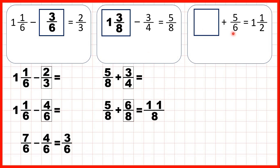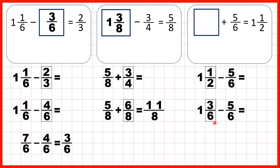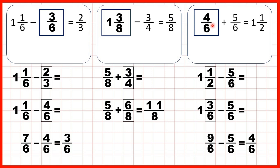Now something plus 5 sixths equals 1 and a half. Here we have a missing number addition, and whenever we have a missing number addition we always use subtraction to find our missing number. So we need to work out 1 and a half minus 5 sixths. We need the denominators to be the same, so 1 and a half is the same as 1 and 3 sixths, because 2 times 3 is 6 and 1 times 3 is 3. But we need to take 5 sixths away, so let's turn 1 and 3 sixths into an improper fraction: 1 times 6 is 6, plus 3 is 9, so that's 9 sixths. Now the denominator stays the same and 9 minus 5 is 4, so our missing number is 4 sixths.